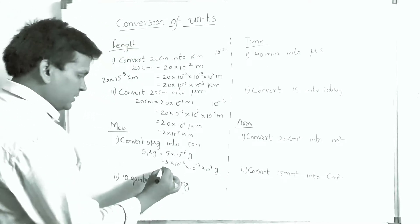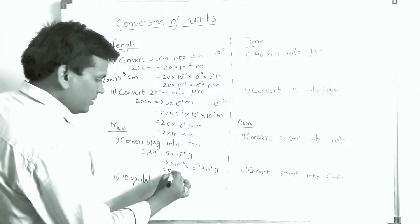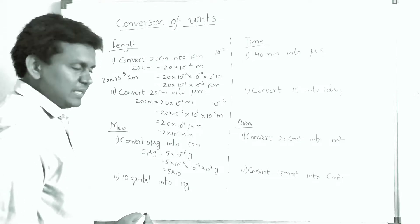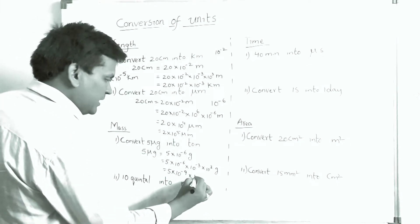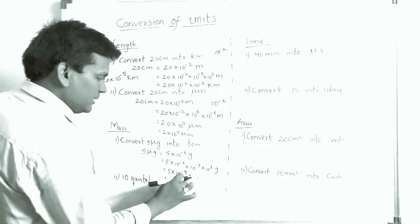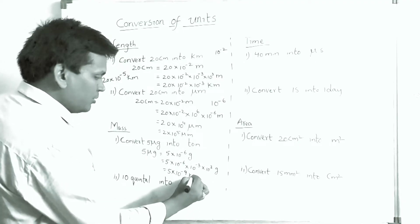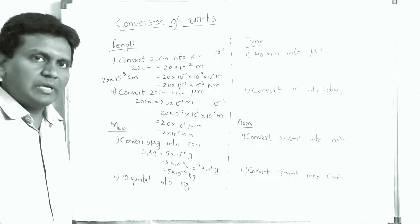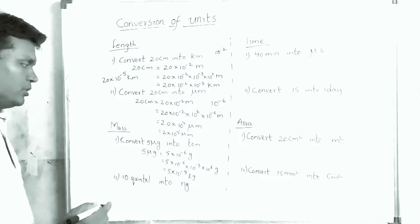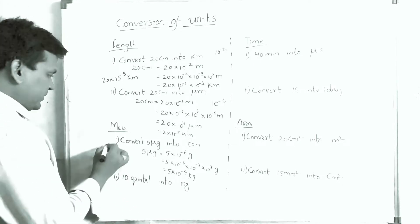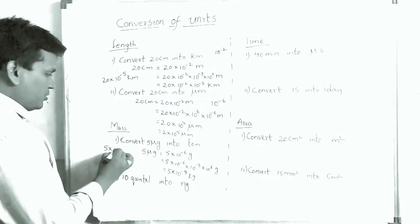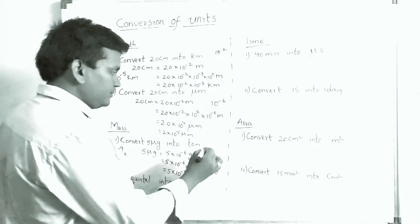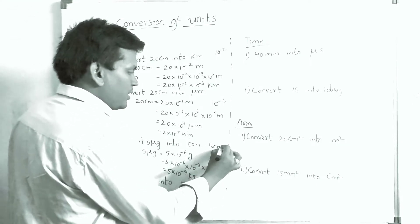Adding the powers: minus 6 plus minus 3 gives minus 9. So 5 micrograms = 5 × 10⁻⁹ kilogram. Now this kilogram should be converted into tons. Since 1 ton = 1000 kg = 10³ kg, we write 10⁻³ × 10³ kg.